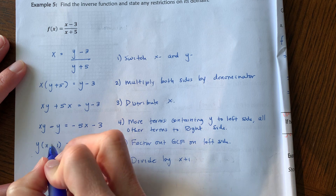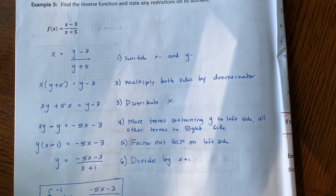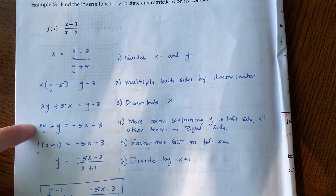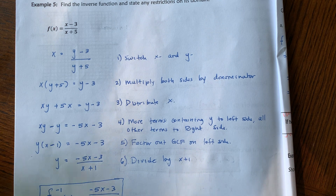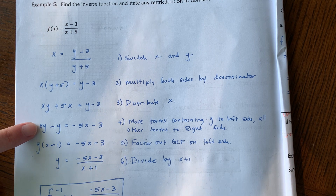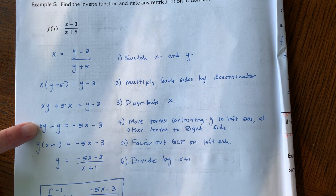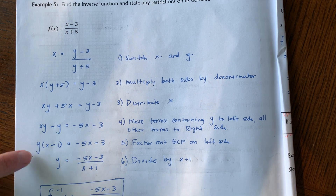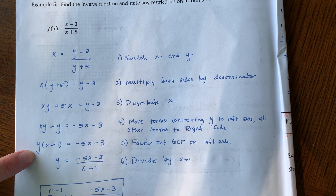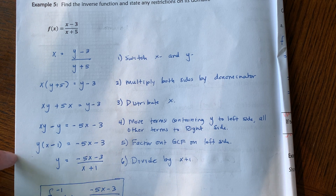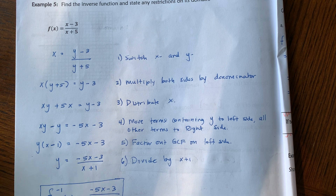I have a greatest common factor on the left-hand side: a y. On the right side, we subtract the 5x, so I have negative 5x plus 3. Notice I have all terms with the y value on the left side and all other terms on the right side. The greatest common factor is y, so I'm going to factor that out: xy divided by y is x, negative y divided by y is negative 1. So we have y times the quantity x minus 1 equal to negative 5x minus 3.